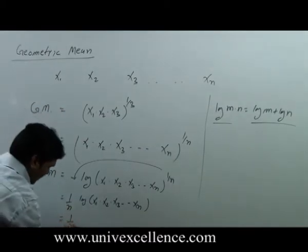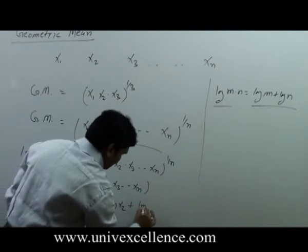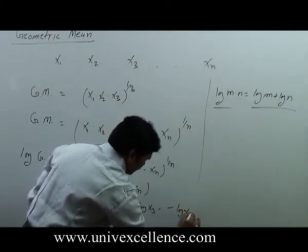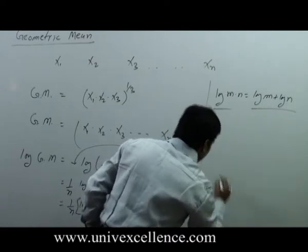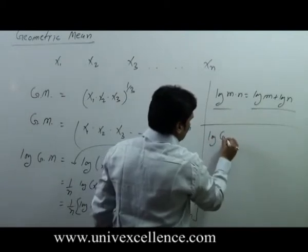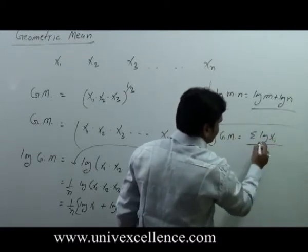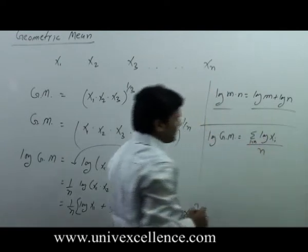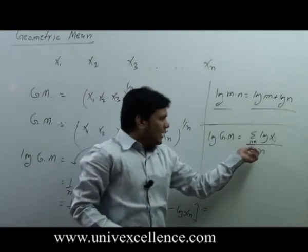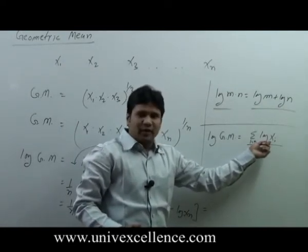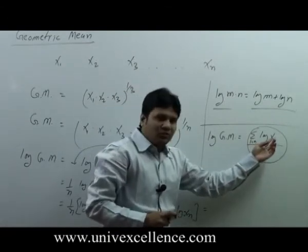That can be written as 1 upon n times log x1 plus log x2 plus log x3 up to log xn. So this particular expression can be written as: log of geometric mean equals sigma of log xi divided by n, where i is 1 to n. In this way, the logarithm of geometric mean is the arithmetic mean of the log values of those observations.